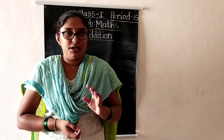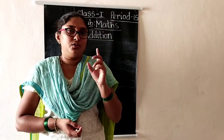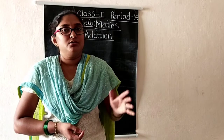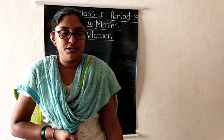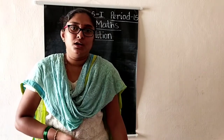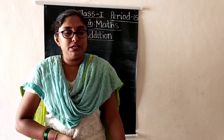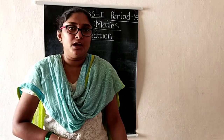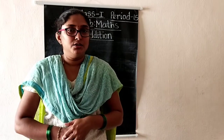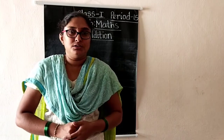So already we learnt addition of two numbers — two one-digit numbers. So horizontal addition, vertical addition, addition by using a number line, addition by using an abacus. And the zero concept. These are all the things we learnt in the previous classes.